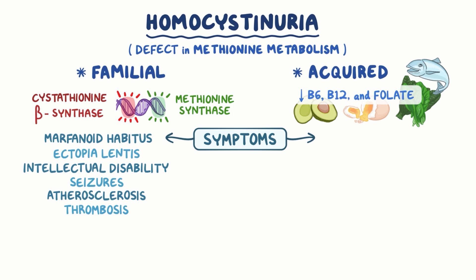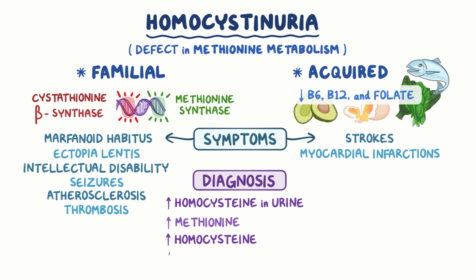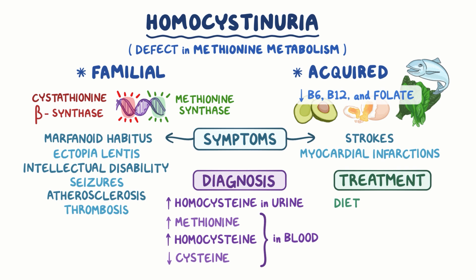The acquired form usually has symptoms related to atherosclerosis and thrombosis, like strokes and myocardial infarctions. It's usually diagnosed by the presence of high levels of homocysteine in the urine, elevated methionine and homocysteine, and decreased cysteine in the blood. It's treated with proper diet and betaine if needed.